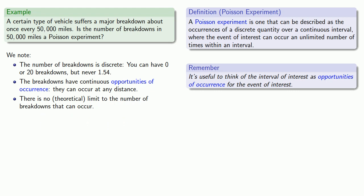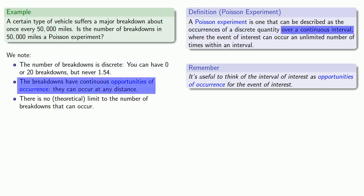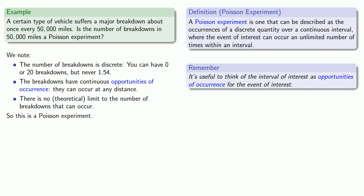And so we're looking at the occurrences of a discrete quantity over a continuous interval, where the event of interest can occur an unlimited number of times in the interval — and so this is a Poisson experiment.